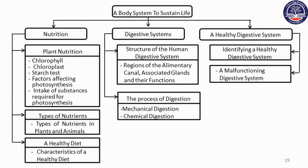Nutrition and types of nutrients are important. A healthy diet is required to maintain a healthy digestive system. The structure of the human digestive system and the process of digestion are key topics, along with how to treat diseases of the digestive system.